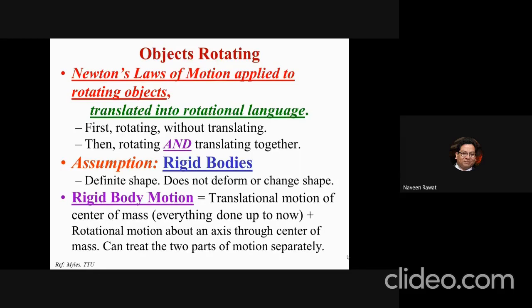We have to assume that we are dealing with rigid bodies. With rigid bodies, what we mean is that they have a definite shape — they do not deform or change shape during motion. For translational motion, even for continuous objects that are moving, we need to understand the idea of center of mass, because the position of the center of mass is where the entire mass of the object is concentrated.